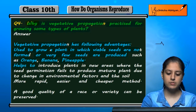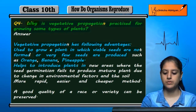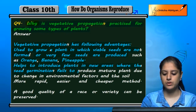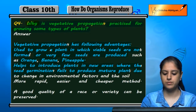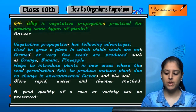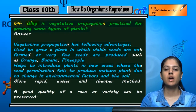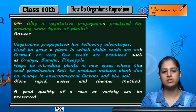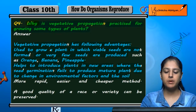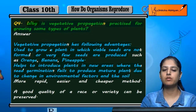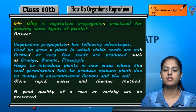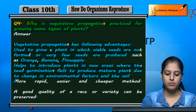It helps to introduce plants in new areas where seed germination fails to produce a mature plant due to changes in environmental factors and soil. If there are few seeds and germination is not possible due to soil or environmental changes, in those areas we can also introduce plants by the process of vegetative propagation.